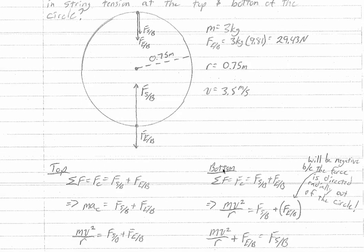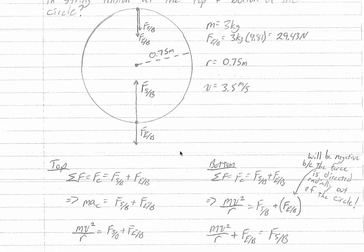Objects moving in a circle have a constantly changing direction. So even though the speed is the same, this change in direction means that any object moving in a circle is constantly accelerating. For our sum of the forces equation, we can set that equal to the centripetal force F sub c, which is equal to the force of the string on the bucket plus the force of the earth on the bucket.